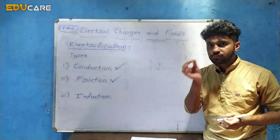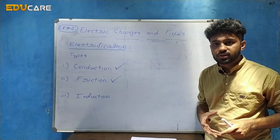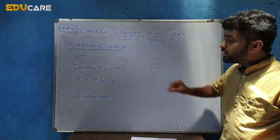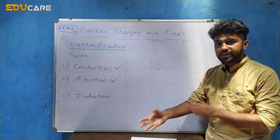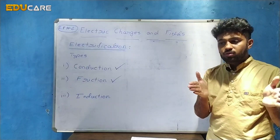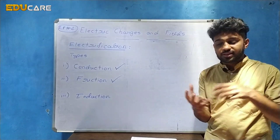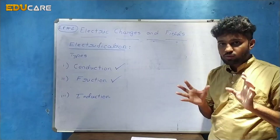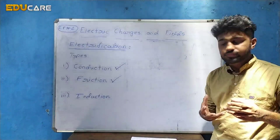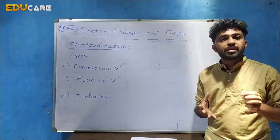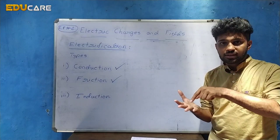We have studied what friction is in the first year — friction is a force which opposes the relative motion between two objects or two bodies. Here we are using the method of friction, the same concept, for charging bodies. For example, in an accident when metal bodies hit each other, that part heats up and charges develop. Another example is lightning — when clouds collide, charges develop. Also, in the textbook, when we rub a glass rod with a silk cloth, the glass rod becomes positively charged and the silk becomes negatively charged.